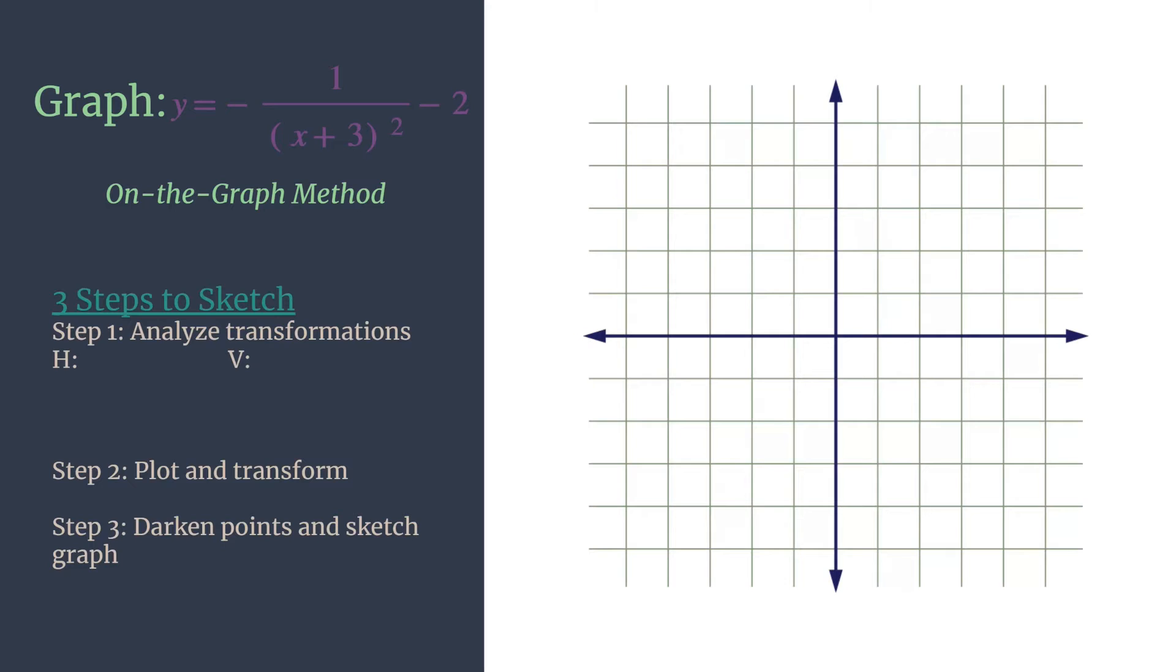Here's our equation and our setup, and let's note our parent function and get a quick little sketch of it off to the side. So we're working with y equals 1 over x squared as the parent, and that's our volcano. It's got the symmetrical curves in the first and second quadrant, and it does have asymptotes. It has one at x equals 0, or on the y-axis, and another one at y equals 0, or on the x-axis.